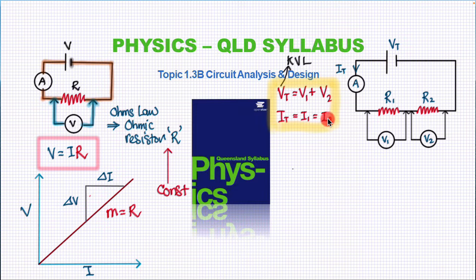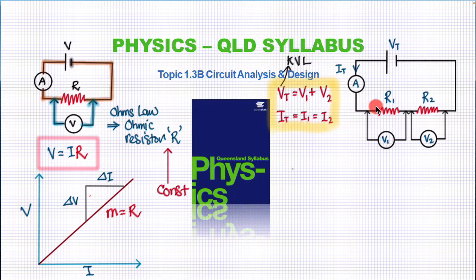Now with current in a series circuit, as you can see it is a single loop so the current only has one pathway to take. It does not matter where you are in that circuit or which series resistor you measure — the current is always constant, or the same.